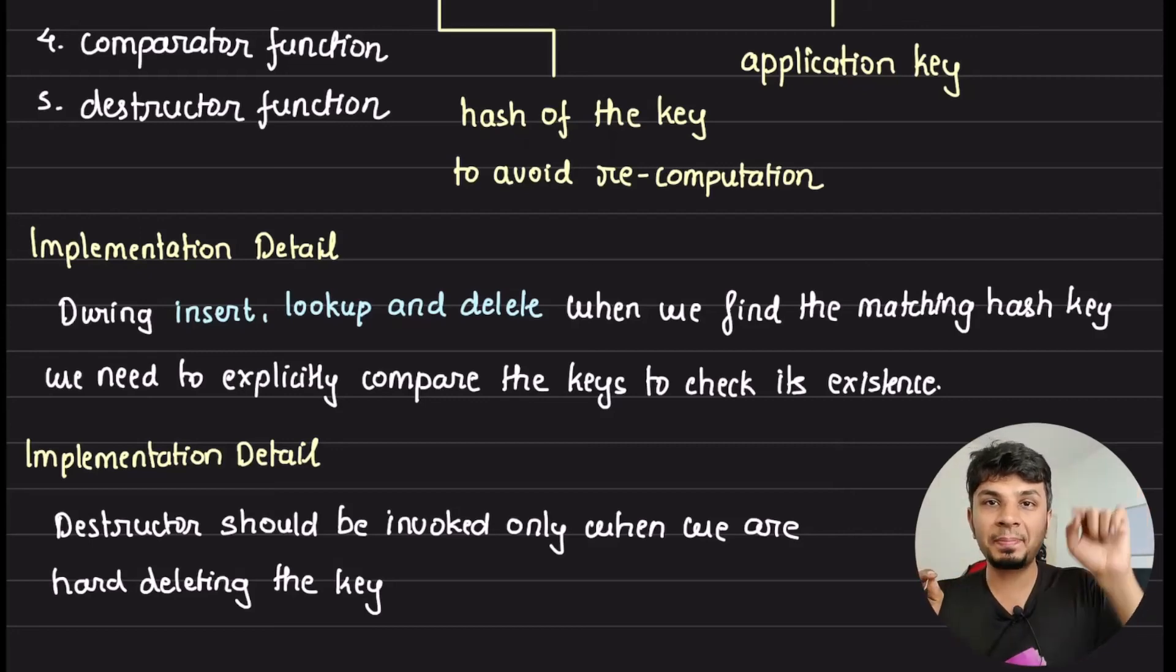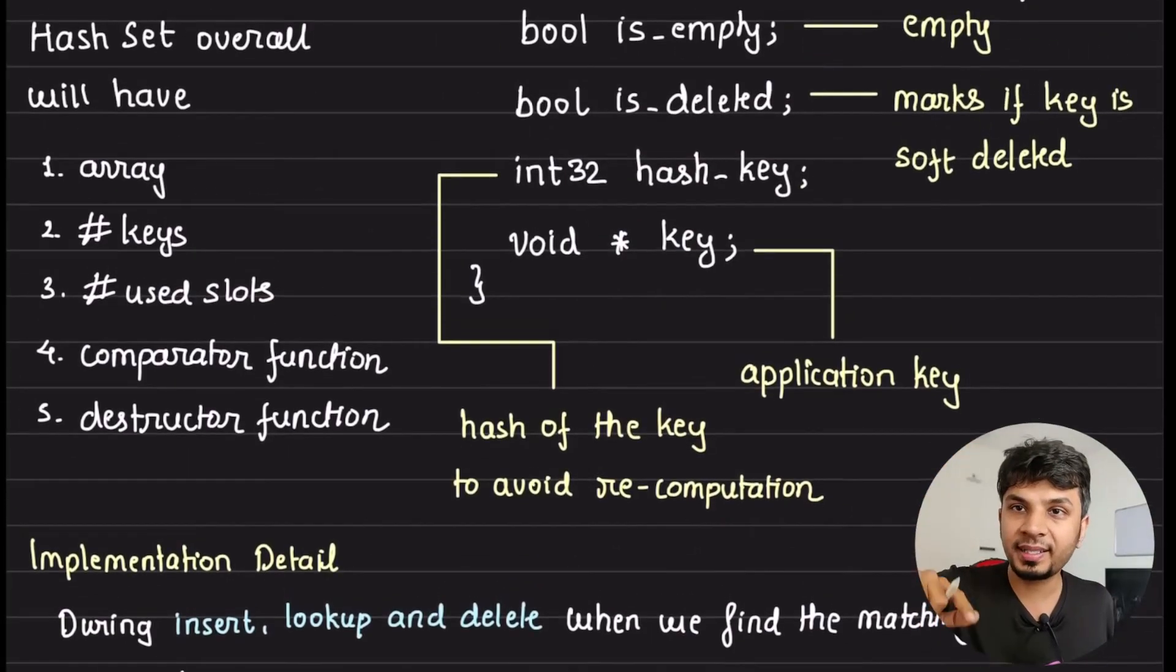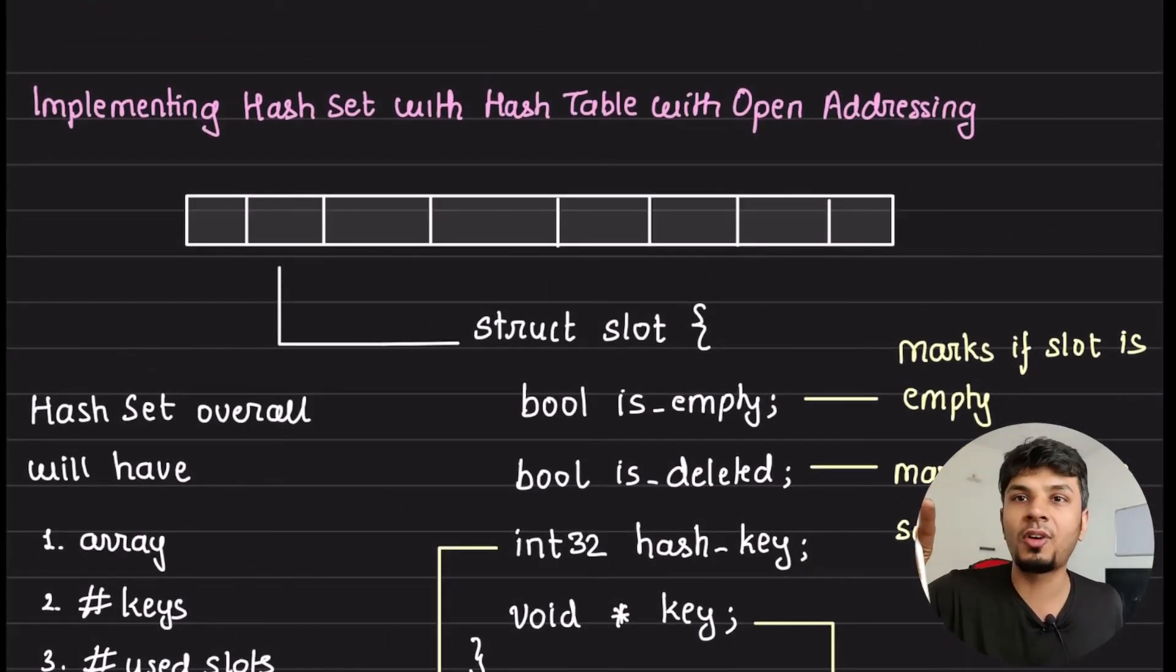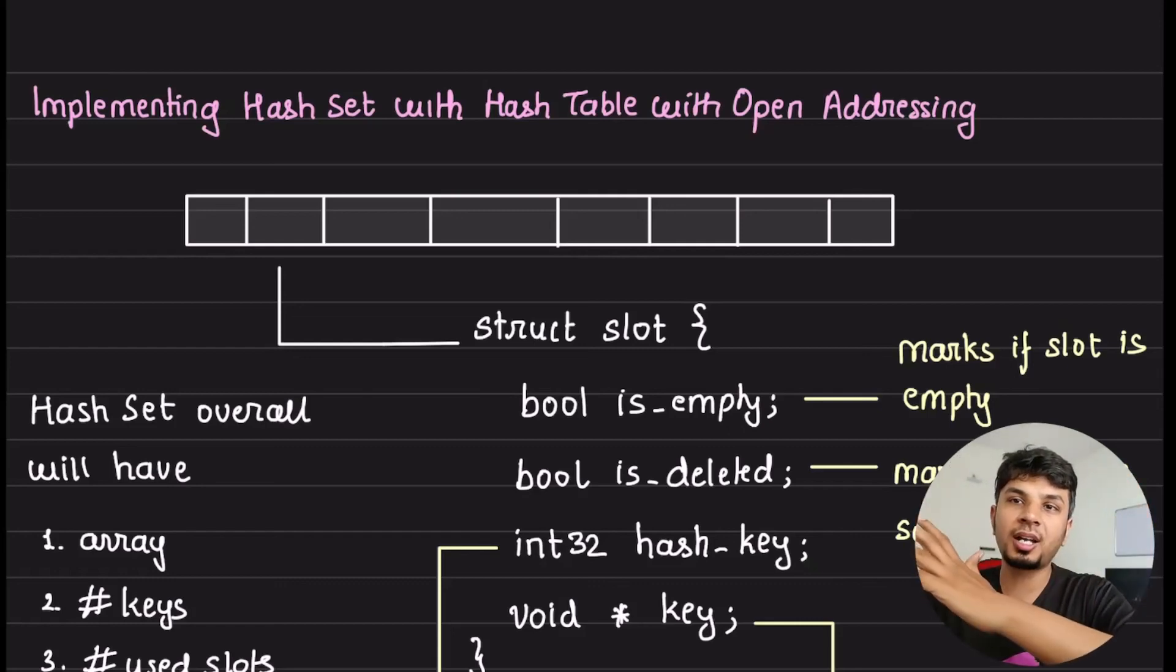Time for implementation detail: During lookup, insert and delete, when we find a matching hash key, we need to explicitly compare the keys to check for its existence. We have to do that because two application keys can collide to the same location. Just comparing hash keys wouldn't work. That's why comparator function is very important. And the final implementation detail is your destructor should only be invoked when we are hard deleting the key. Given that in open addressing, whenever we delete a key we are doing a soft delete, and then during resize we are doing hard delete. So destructor function needs to be invoked only when we are doing hard delete of the key. Otherwise dangling pointer, illegal reference and whatnot will crop up. So always when you are doing resizing, then you trigger a hard delete, otherwise let the entry be soft deleted. So your resize might get a little more expensive given that we are also invoking the destructor function back then, but it is worth it. It would help you save old bugs that happen in the system.